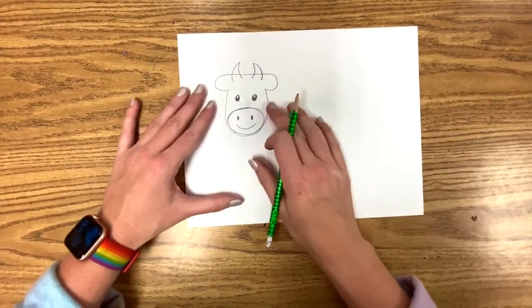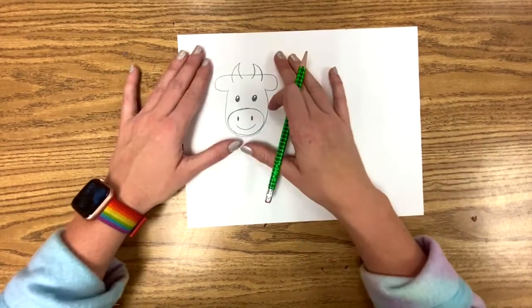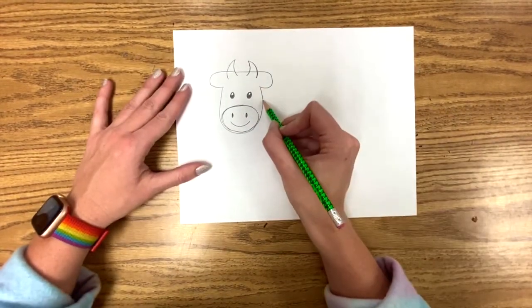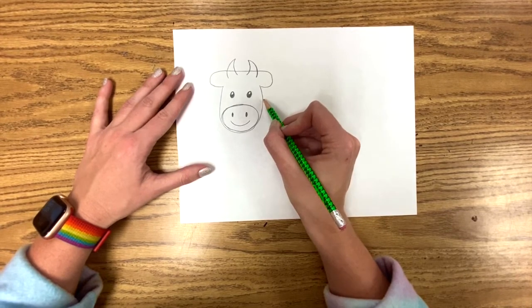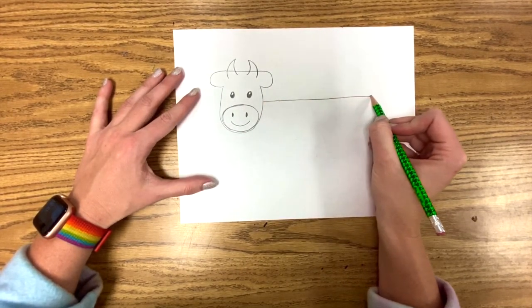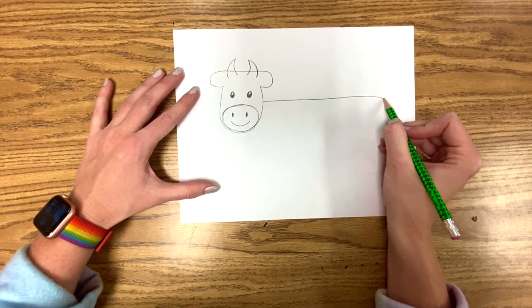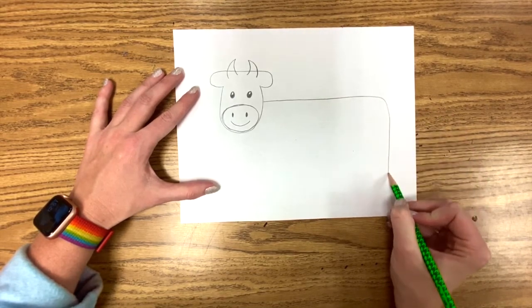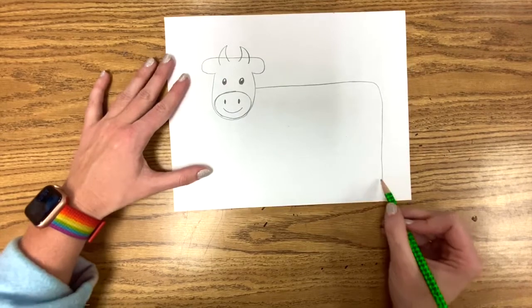All right, body. So, remember big, you have a big head, have to have the body to match. So, touch the head kind of in the middle right here. Bring a straight line over. And then curve it down. And now we're going to go down here. We're going to start the legs.